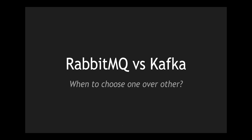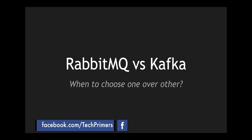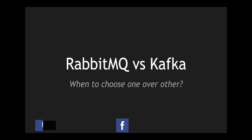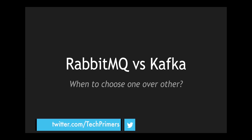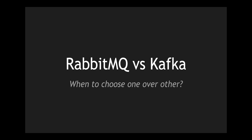In this new age of evolving architectures, events have always been consistent. We use events in one form or the other while processing messages. With multiple open source platforms, it's difficult to choose one over the other. In this video we are going to understand the trade-offs between RabbitMQ and Kafka, which can help us in choosing the right messaging platform within our event-driven architecture.